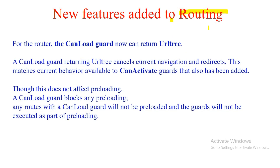A new feature is also added to routing. The `canActivate` and `canLoad` guards, which prevent navigation until a condition is met, now support returning a URL tree. The `canLoad` guard method can now return a URL tree, though it does not affect preloading — `canLoad` still blocks preloading. If the guard condition is not satisfied, navigation is cancelled. The return type is changed, but the complete functionality remains unaffected.